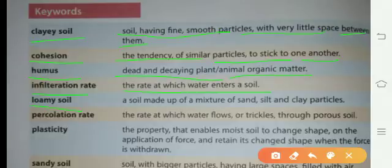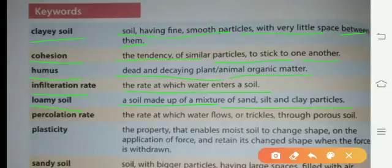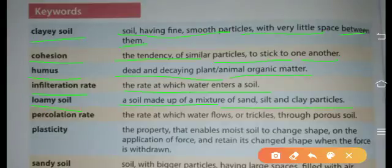Loamy soil: soil made up of mixture of sand, silt and clay particles. وہ soil جس کے particles جو ہیں وہ mixture ہوتے ہیں sand, silt اور clay particles کا loamy soil کہلاتے ہیں. Percolation rate: the rate at which water flows or trickles through porous soil.